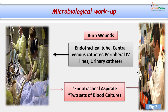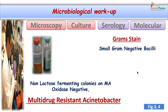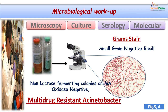His endotracheal aspirate was collected, plus two sets of blood cultures were sent for detailed microbiological workup. Blood cultures and endotracheal swabs were put up for culture. Non-lactose fermenting colonies grew on MacConkey agar; biochemical analysis showed they were oxidase negative, and gram staining revealed small pleomorphic gram negative bacilli.